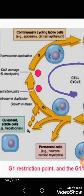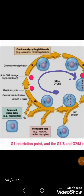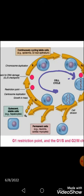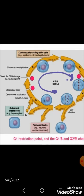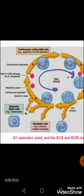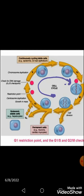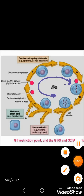Certain genes called proto-oncogenes are responsible for carrying out cell proliferation. However, if a mutation occurs in these proto-oncogenes, it can lead to unchecked cell division, resulting in tumor formation. For normal regulation of the cell cycle, every checkpoint must be passed correctly, and when everything proceeds smoothly, a normal cell cycle occurs.